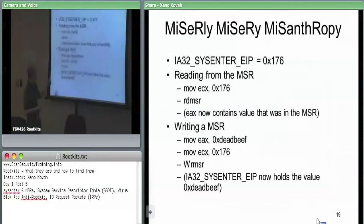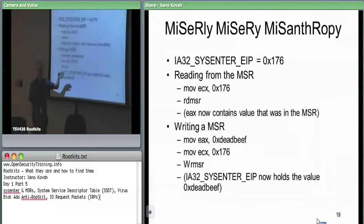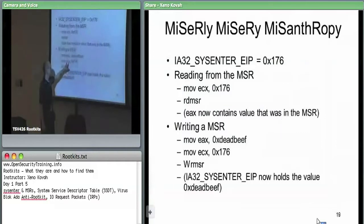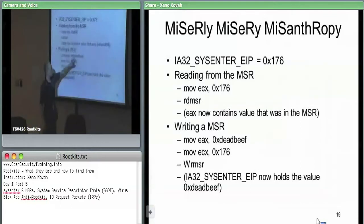If you were a rootkit and wanted to hook sysenter so it no longer points at the default, you set EAX to the target EIP that will be used when sysenter is called. Then set ECX to MSR number 176 and call write MSR. That writes into the model-specific register. There was an example of this in the rootkit class homework.